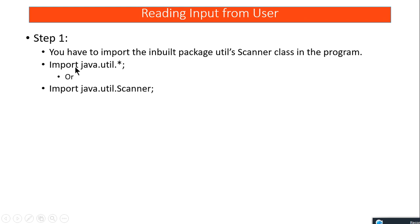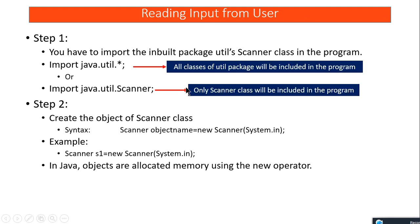We write this import statement before the start of the class. Before the start of the class I'll write: import java.util.* — java is the package name, util is the sub-package, and star means all the classes of the util package are imported. Or you can be specific and write import java.util.Scanner to only include the Scanner class.